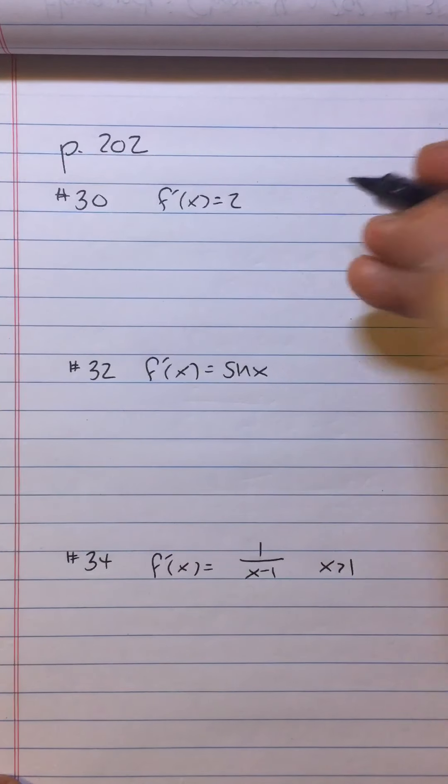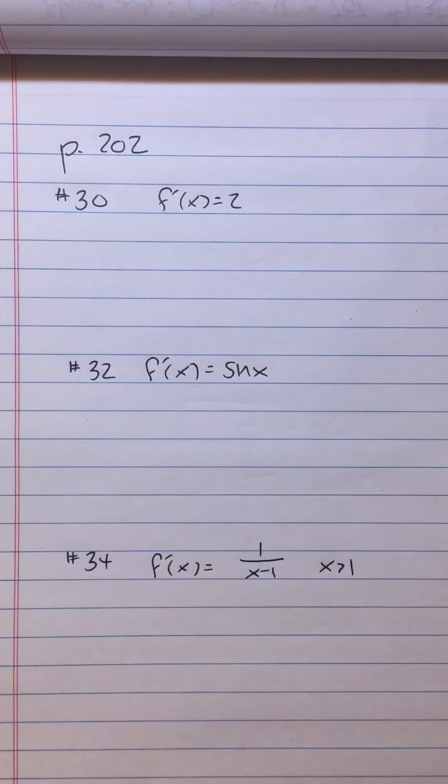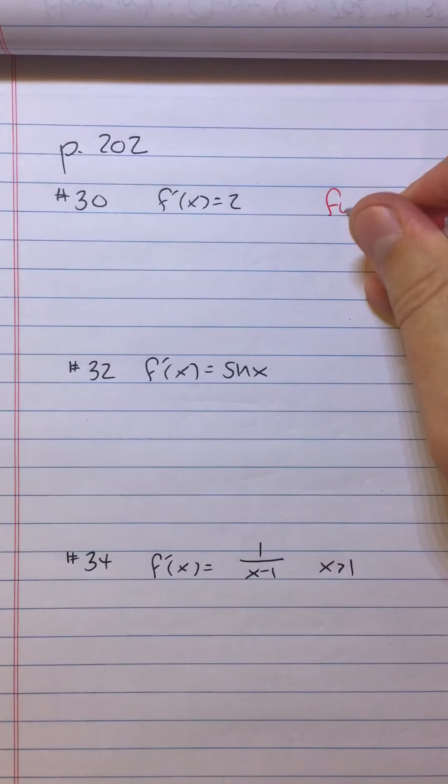All right, so we're looking for some function that the derivative of that function is 2. What could that function be? Well, one obvious guess is f of x could be 2x because the derivative of that would be 2.